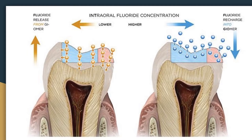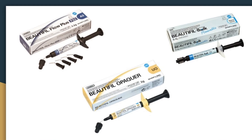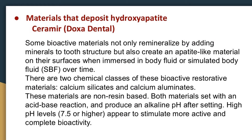Some bioactive materials not only remineralize but also create an apatite-like material on their surfaces when immersed in body fluid or simulated body fluid (SBF). Over time, there are two chemical classes of these bioactive restorative materials: calcium silicates and calcium aluminates. These materials are non-resin-based; both set via an acid-base reaction and produce an alkaline pH after setting. High pH levels of 7.5 or higher appear to stimulate more active and complete bioactivity.